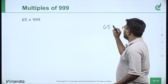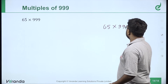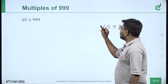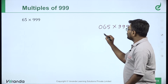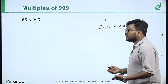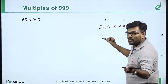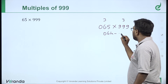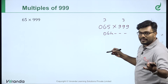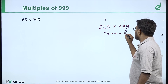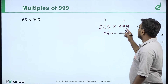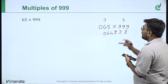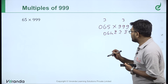Again, 65 into 9999. Here we have Case 2: 2 digits and 4 nines — not equal. So add two zeros to make 4 digits: 0065. First step: 0065 minus 1 = 0064. Second step, 3 gaps with complements: 4 gives 5, 6 gives 3, 0 gives 9. Answer: 65 into 9999 is 649935.